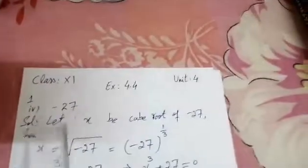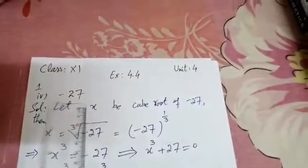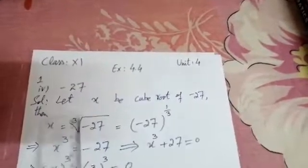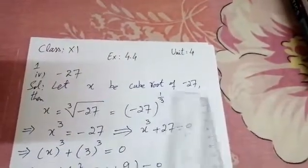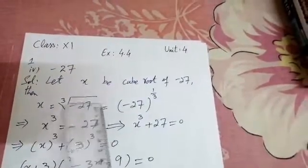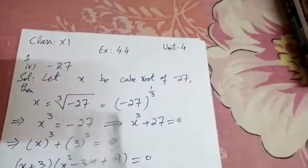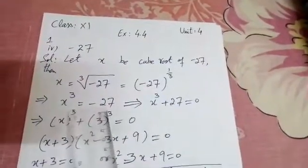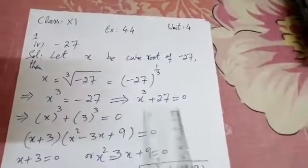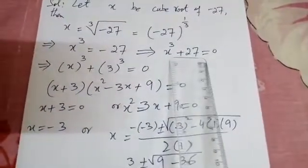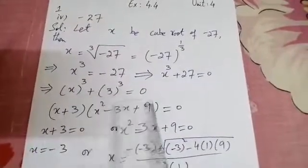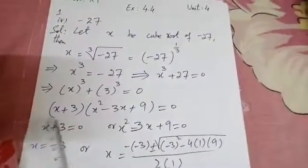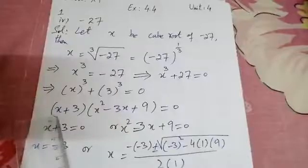We move to Part number 4: find the cube roots of minus 27. Solution: let X be the cube root of minus 27. Then X equals the cube root of minus 27, which equals (minus 27) to the power 1/3. This implies X³ equals minus 27; shifting 27 to the other side it becomes X³ plus 27 equals 0, which implies X³ plus 3³ equals 0. Applying the sum of cubes formula, it becomes (X plus 3)(X² minus 3X plus 9) equals 0.